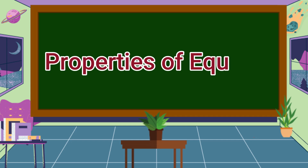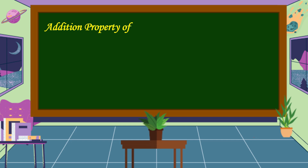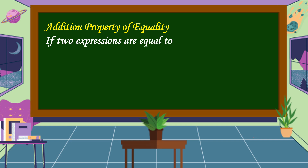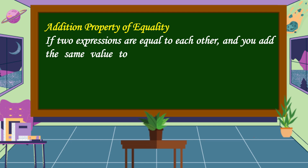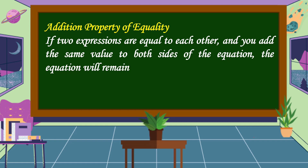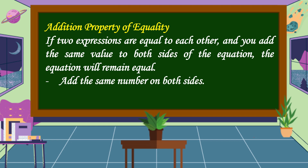Before we solve an equation, we are going to study the properties of equality. The first property is the addition property of equality. If two expressions are equal to each other and you add the same value to both sides of the equation, the equation will remain equal. You can add or subtract the same number on both sides.